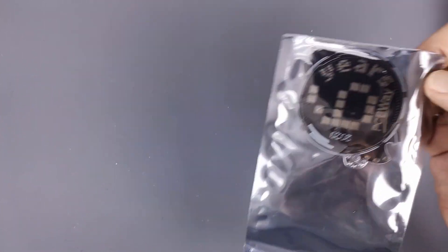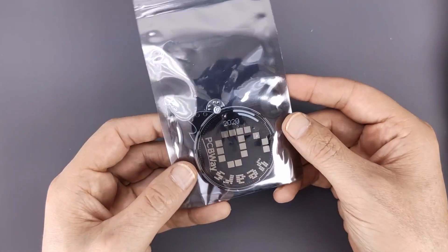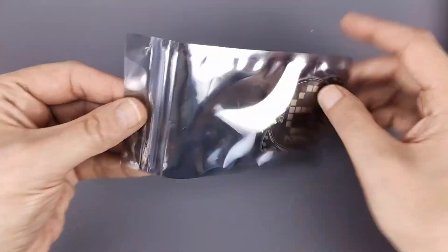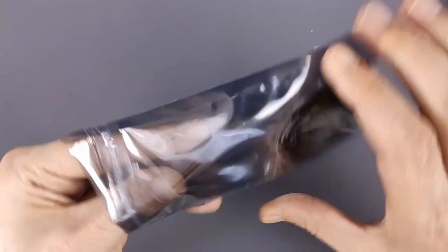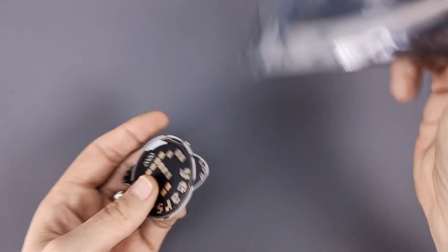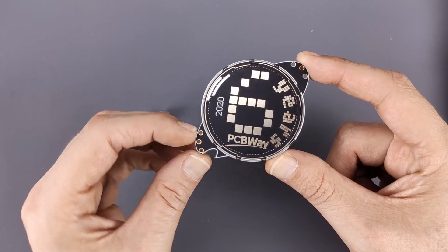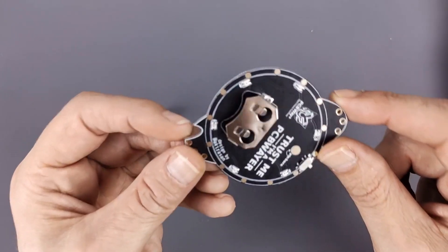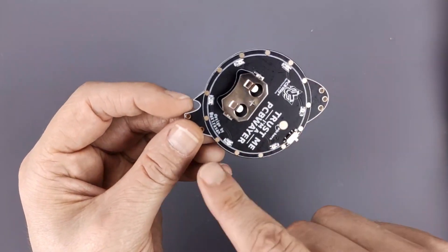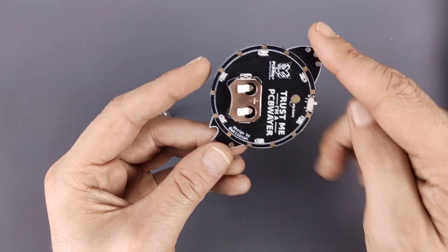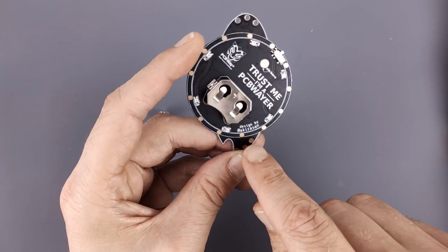And there was something else, it dropped out. Let's move the box away. They also sent me a badge they made - six years of PCBWay. And there's a switch and I believe these are some RGB LEDs.